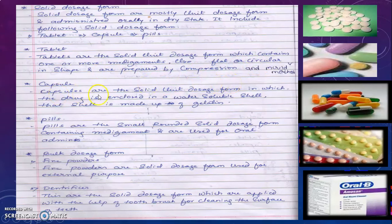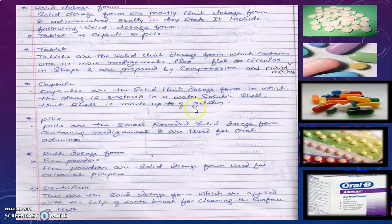Next, capsules. Capsules are the solid unit dosage forms in which the drug is enclosed in a water-soluble shell. The outer covering of the capsule is called a shell, and it is made up of gelatin. Gelatin is made from animal skin. The drug is contained inside this shell.